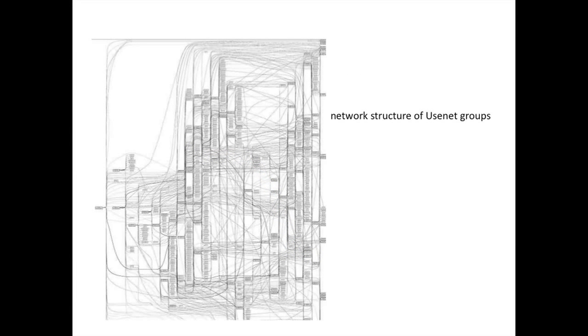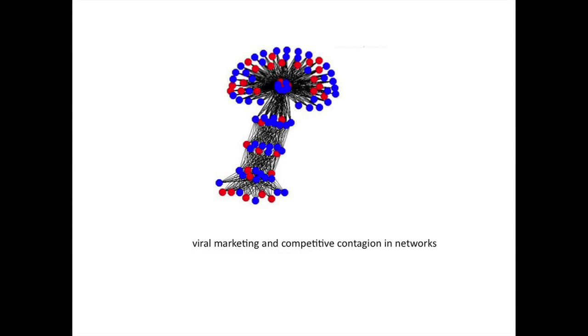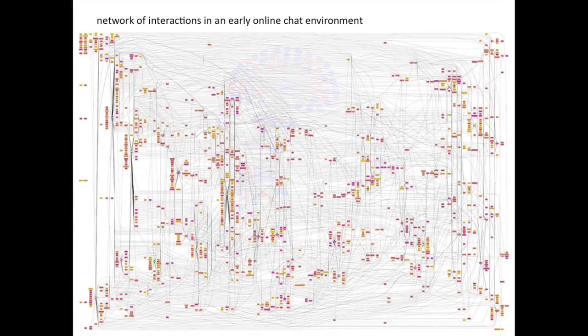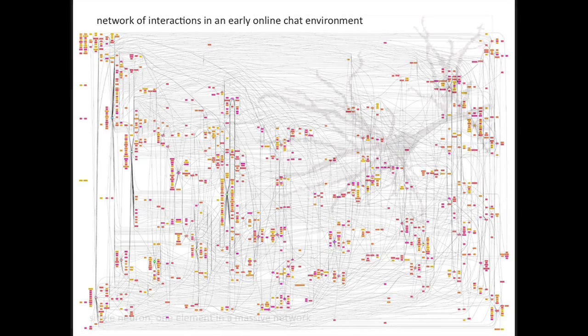The second half of the course will examine the consequences of such structures in a variety of settings. We'll look at how network structure can influence how diseases or ideas spread, or how people vote or trade with each other in economic models.